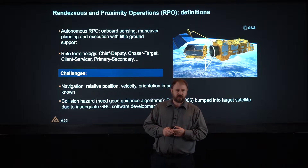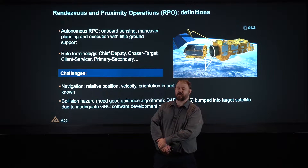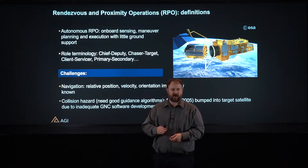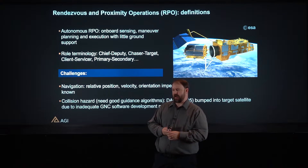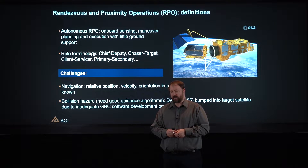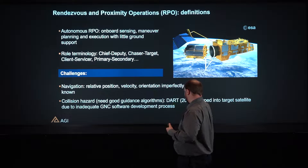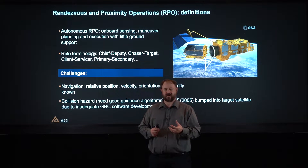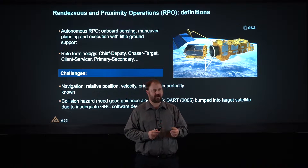There's a lot of different terminology we use. In terms of roles of the satellites and vehicles, we might refer to a chief and a deputy, a target or a chaser — there's lots of different vernacular. Chief among the challenges is knowing where we're at — knowing where our satellite is and where the object of interest is. For example, during the demonstration of autonomous rendezvous technology spacecraft mission in 2005, the spacecraft actually ran into the target vehicle. So we need to be able to know where we're at and where our target is.